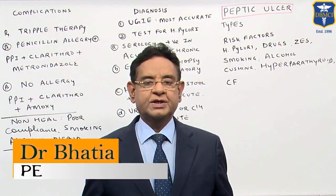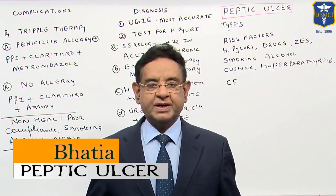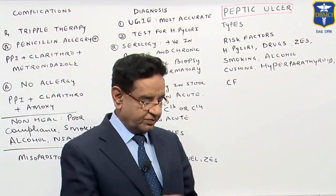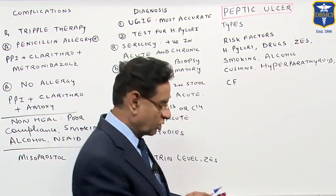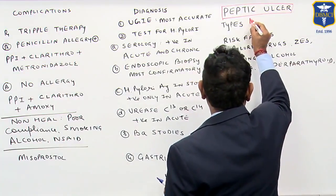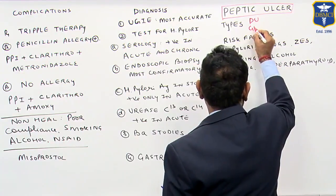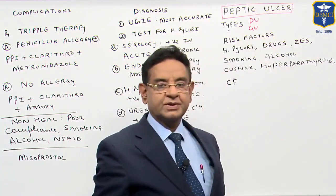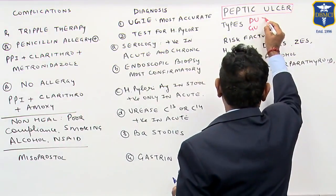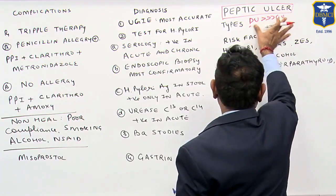Hello friends. Now I will be talking to you about peptic ulcer. When we talk about peptic ulcer, we know there are two things to talk about. One is the duodenal ulcer and the other is the gastric ulcer. Duodenal ulcer is much more common than the gastric ulcer.